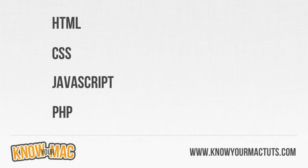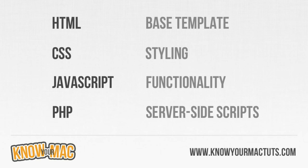The reason web design is a little different from other coding is because they all work together to form a fully operational website. For example, HTML is your base — it contains a listing of all the elements that are going to be on your page. Then you move over to CSS, which styles your page — it tells the browser to make something blue, make that text red.